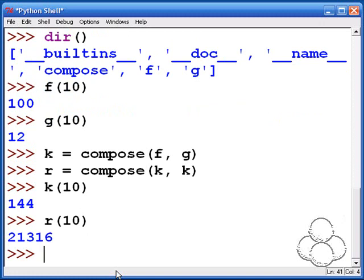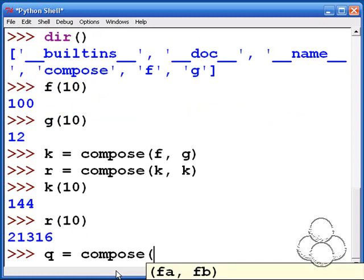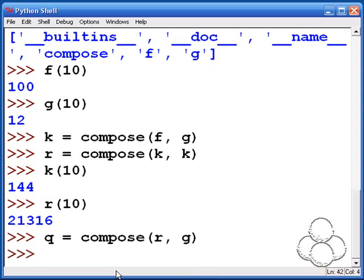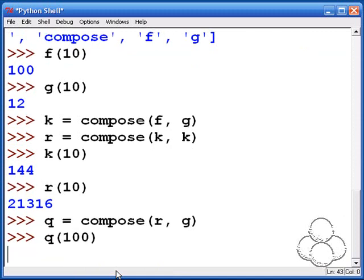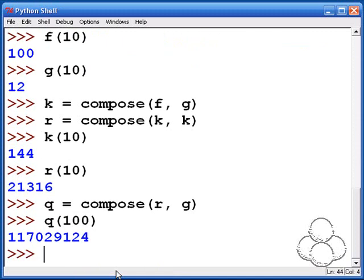That's just how compose was written so that we g something and then we f it. In the case of k, in the case of r, we just k something and then we k it again. You can think of a function as a verb. So here we just k'd a hundred.